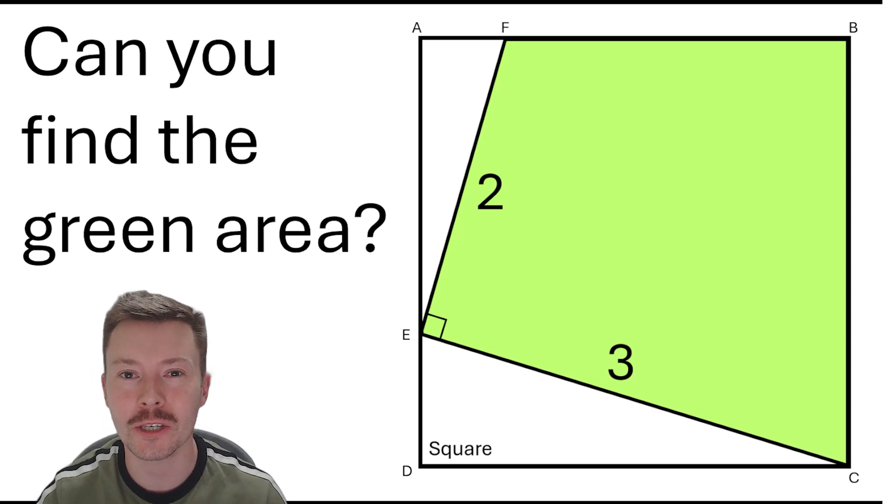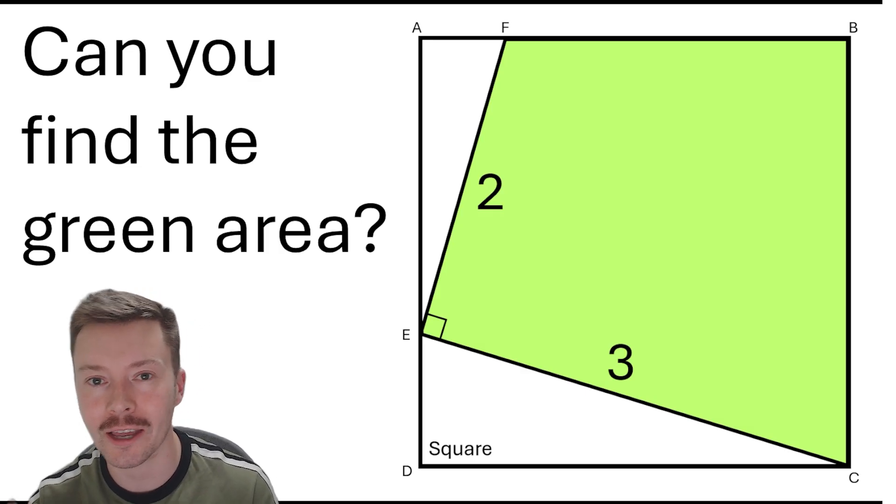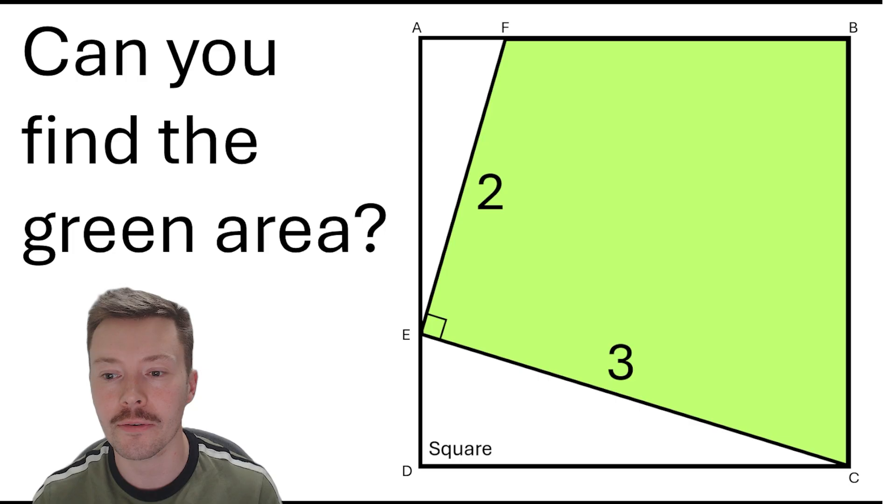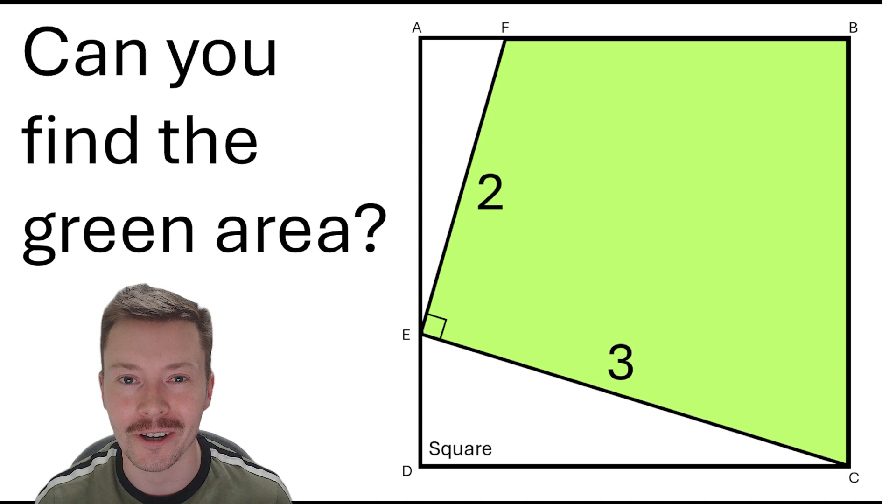Hi and welcome back to the channel. This week's problem is about trying to find the green area inside of this square. Now as you can see we've got two triangles that make two white areas. We're going to be subtracting those from the area of the square to get this green area, and we've got two line segments E to C which is length 3 and E to F which is length 2. Can you solve this problem and can you find the green area?